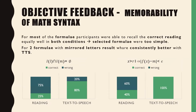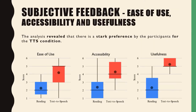Since all participants were able to recall equally well in both conditions, we decided to look at formulae that were more difficult. We chose the formula with the most mirror letters, and we see how text-to-speech improved their performance. As subjective feedback, we studied ease of use, accessibility, and usefulness. All considered metrics gave a stark preference to the text-to-speech access.